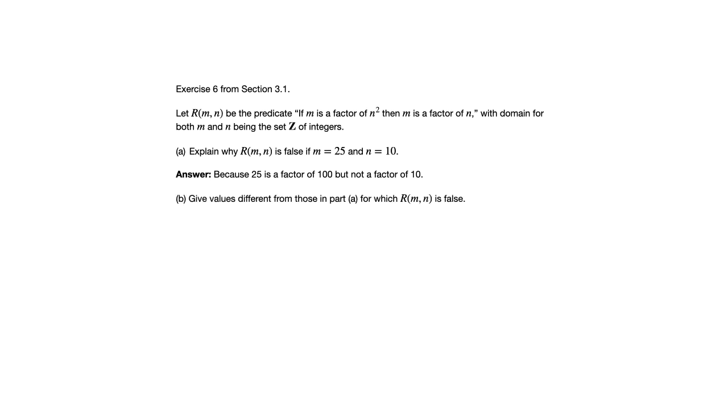Part B says give values different from those in part A for which R(M,N) is false. So again, remember for a conditional to be false, you need the hypothesis, the if part, to be true, and the conclusion, the then part, to be false.